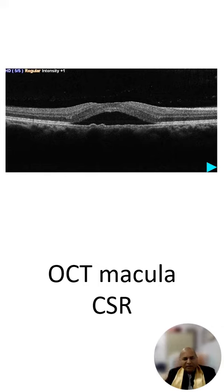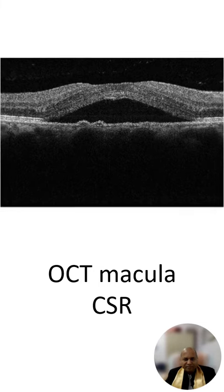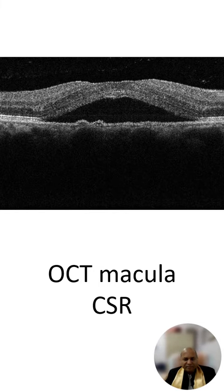The RPE shows some pigment epithelial detachments (PEDs), which are clear fluid-containing spaces in the retinal pigment epithelium with a blister shape. These are the findings you can see in central serous retinopathy in any given patient, although pigment epithelial detachment may or may not be present. Thank you.